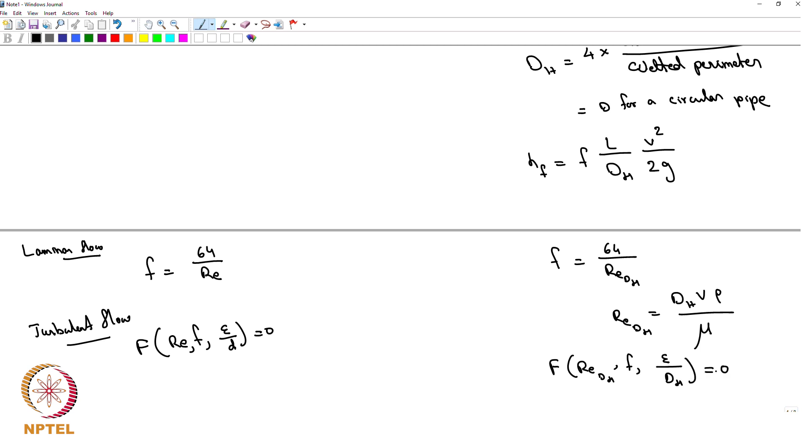For turbulent flow we will get some expression containing Reynolds number, friction factor, epsilon by d equal to zero. Here you will have to do the same relation. What I am saying is that everything that you have done so far we will just borrow the same framework, just replace all diameters with hydraulic diameters. Assume that that is going to work.